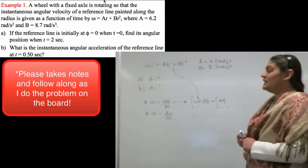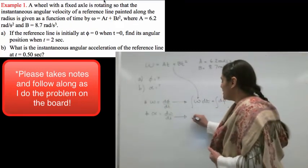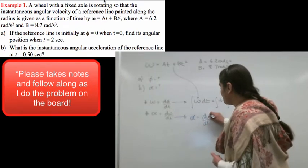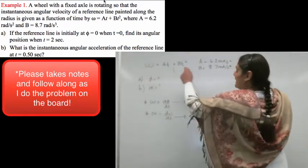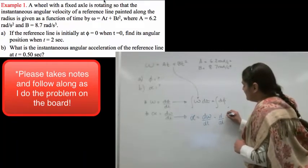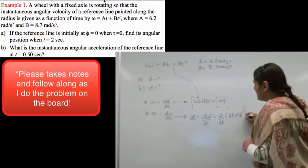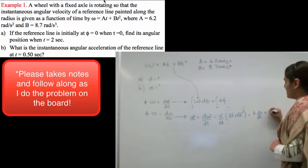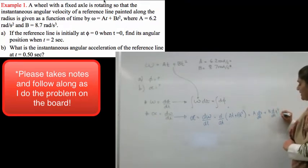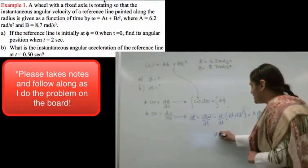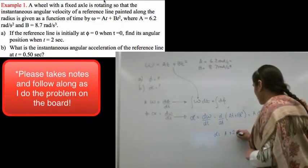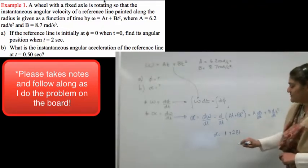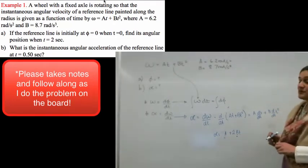Next, we find α. This is even easier because α = dω/dt. Taking the derivative of ω = at + bt², we get d/dt(at + bt²) = a·d/dt(t) + b·d/dt(t²), which gives α = a + 2bt. With a = 6.2, b = 8.7, and t = 0.5 seconds, we can plug in directly and solve.